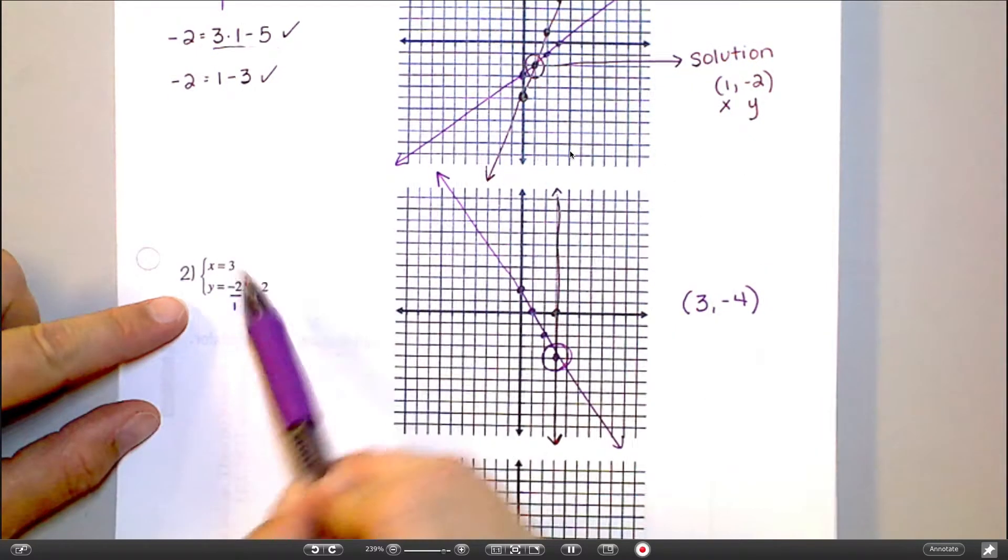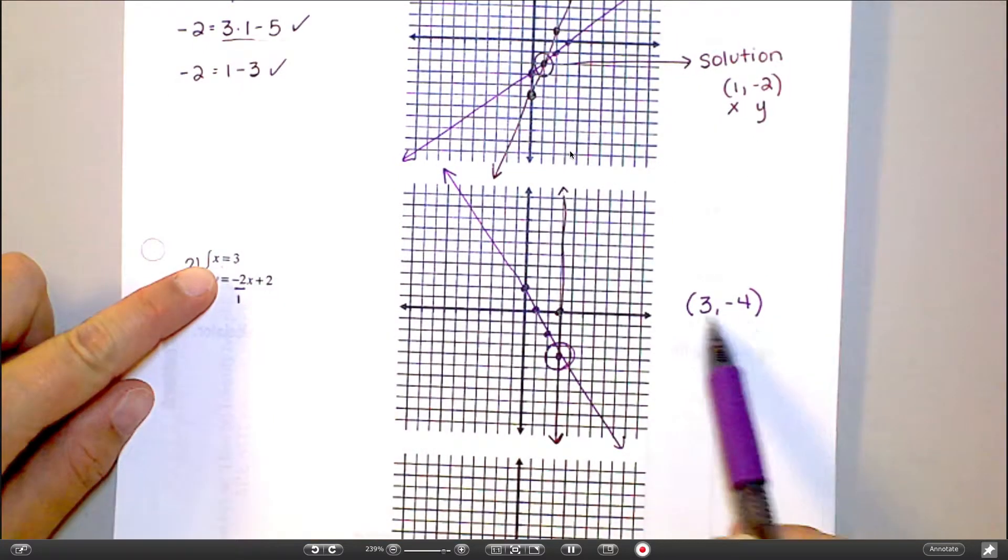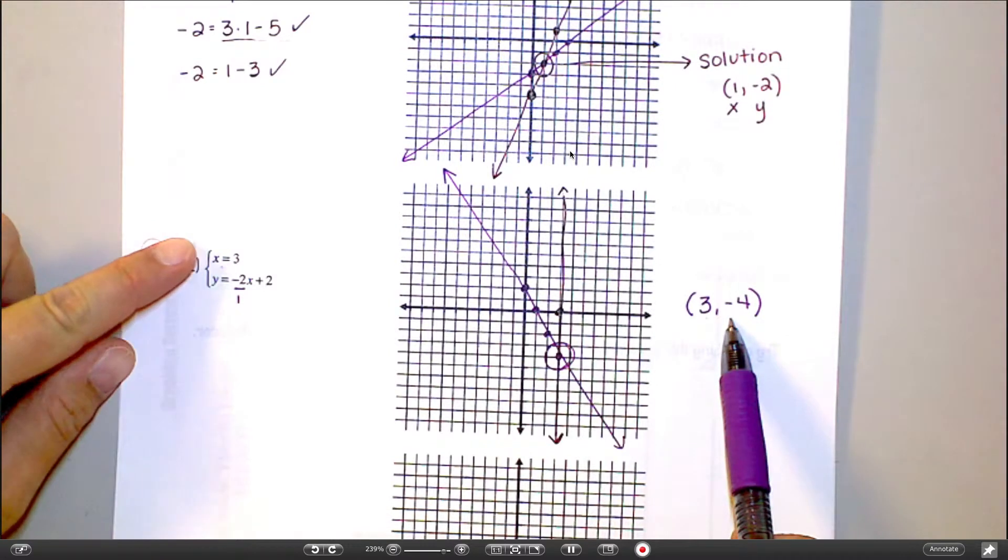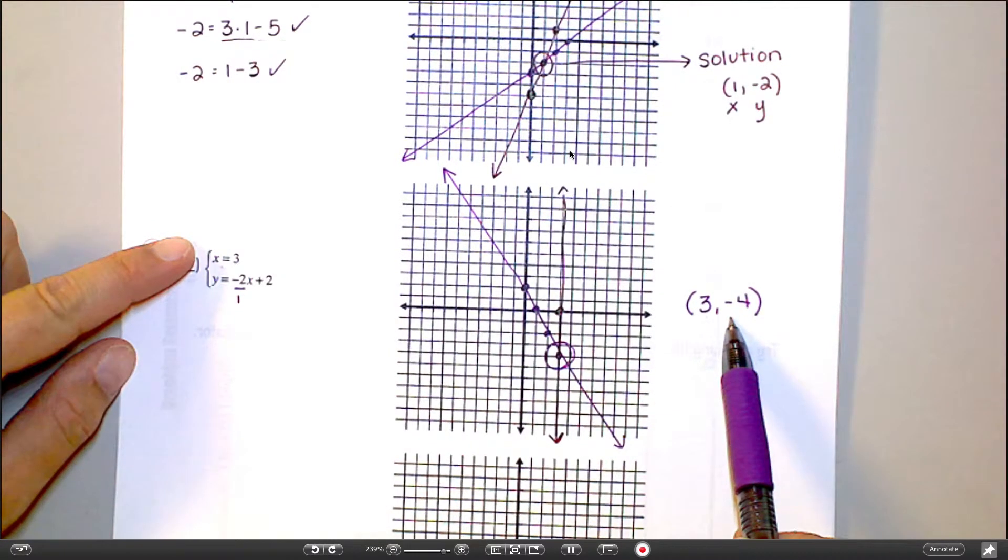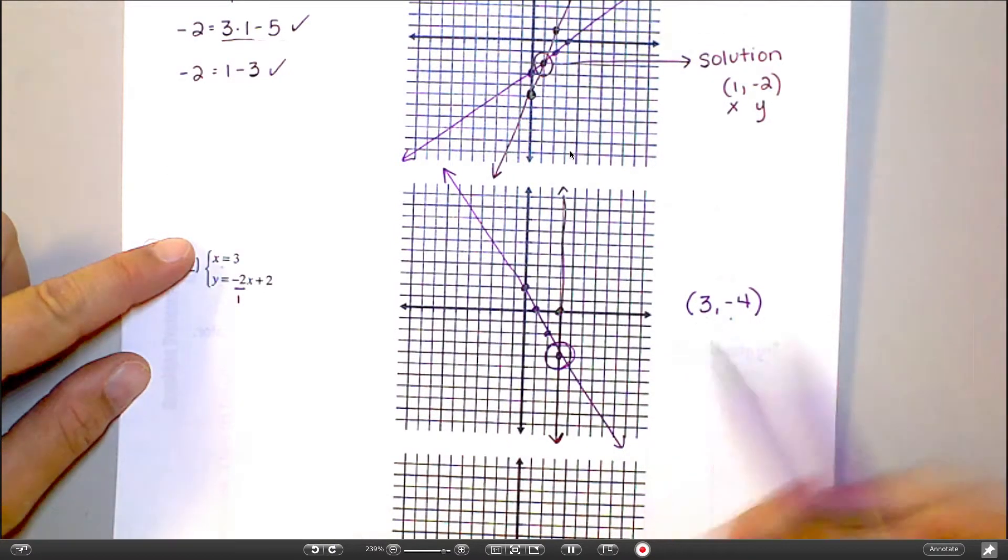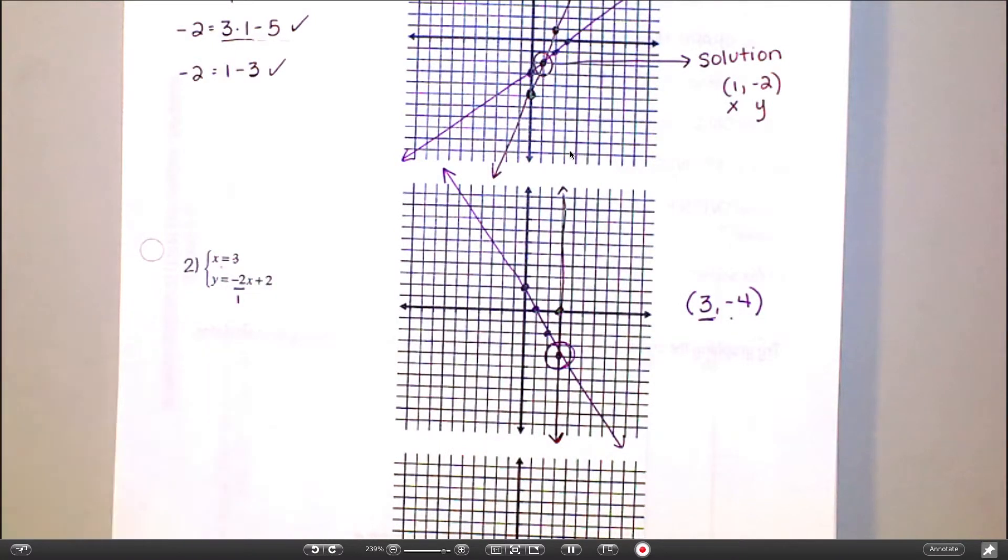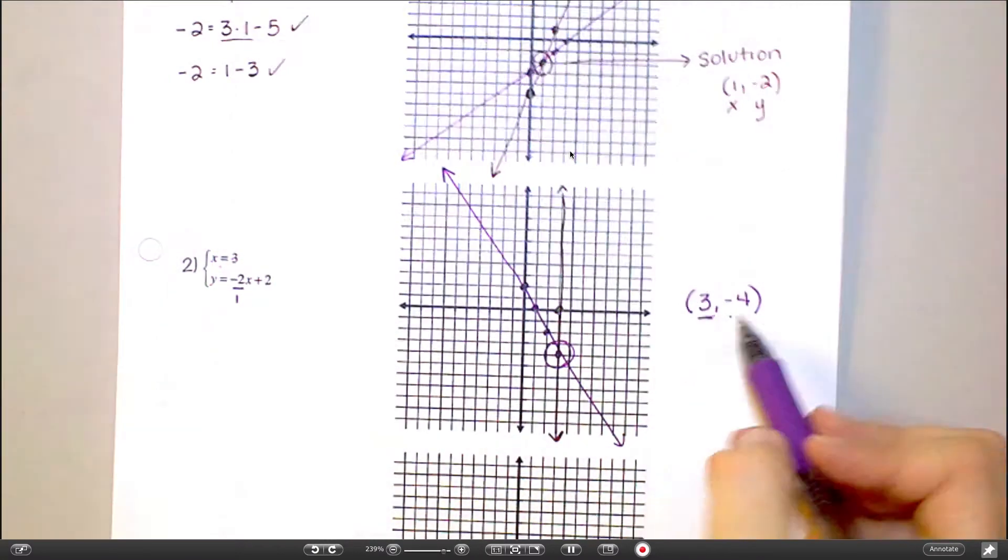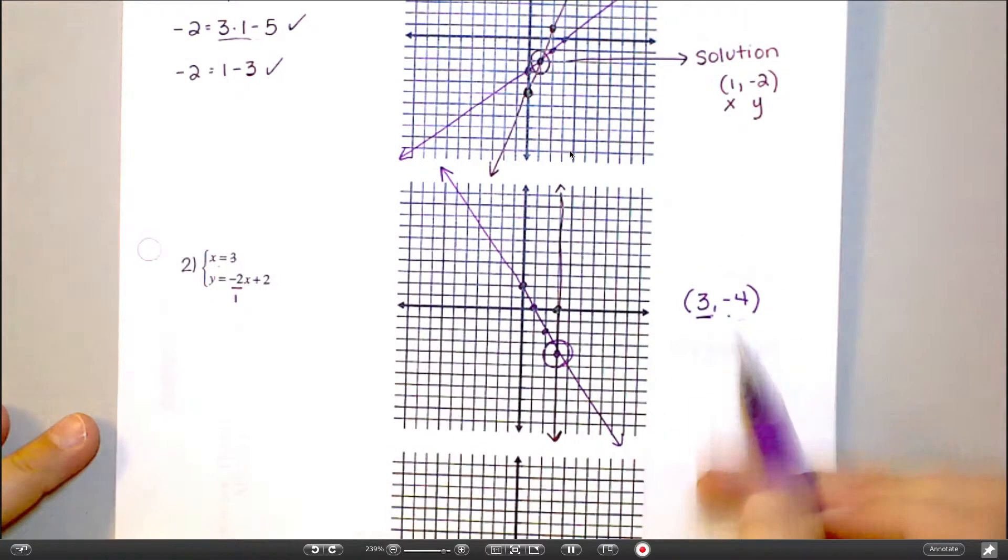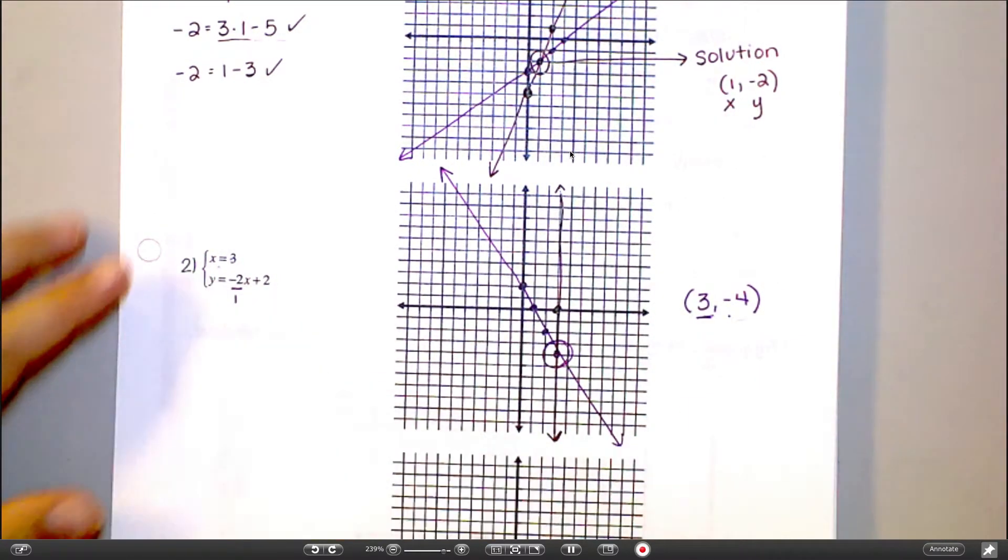Now, to check this one, do I know that this is a solution to that x equals 3? How do I know? Because the x equals 3, right? Remember, this equation, x equals 3, means that x has to equal 3 and y can equal anything you want. So this fits that, right? As long as my x is equal to 3, I'm good.